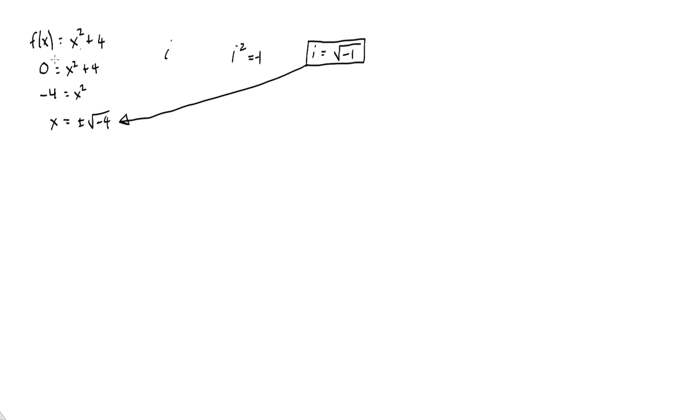Now remember, if we had done this, if we had taken the zeros of a function and we had gotten real answers, those would also be x intercepts. Because real solutions, real roots, real zeros are x intercepts because we set y equal to zero to find x intercepts, don't we?